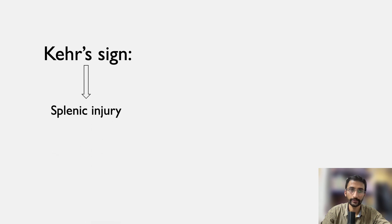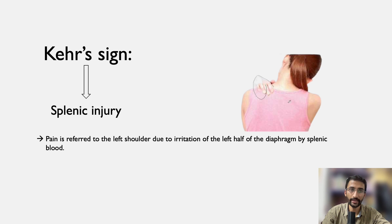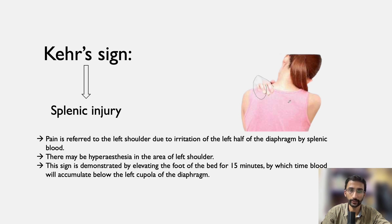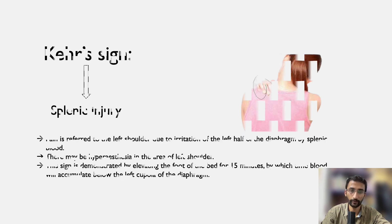Kehr's sign is done in case of splenic injury. Pain is referred to the left shoulder due to irritation of the left half of the diaphragm by splenic blood, and there may be hyperesthesia in the area of the left shoulder. This sign is demonstrated by elevating the foot of the bed for 15 minutes, by which time blood will accumulate below the left cupola of the diaphragm.